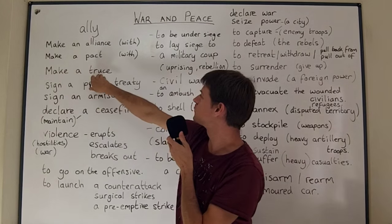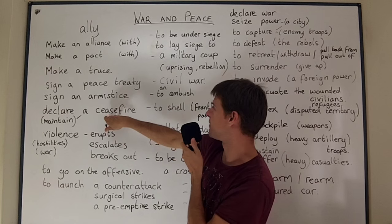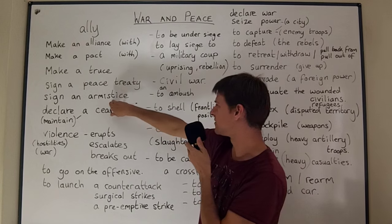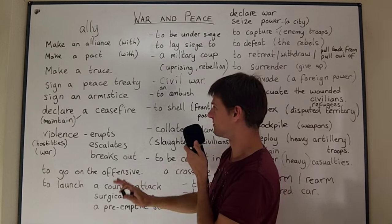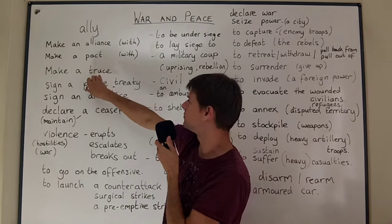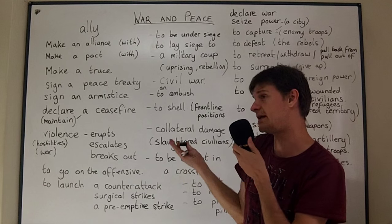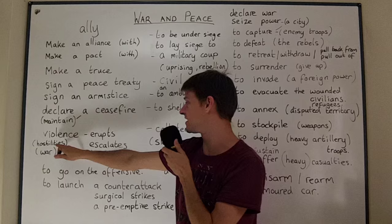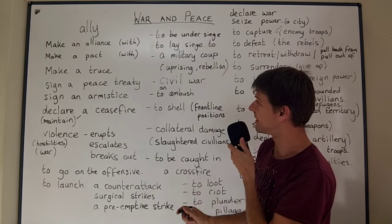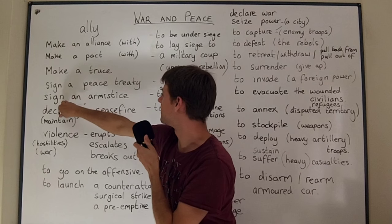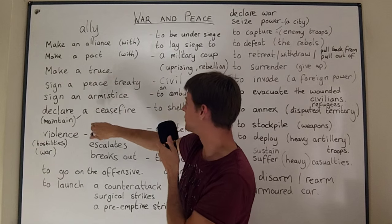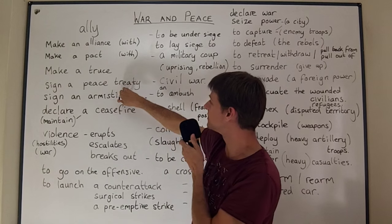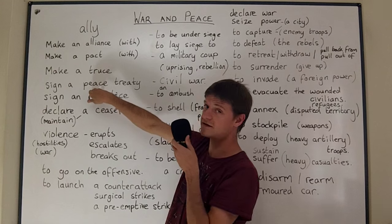You can also make a truce. A truce is a type of ceasefire — an agreement to stop fighting. The same goes for an armistice: it's an agreement to lay down your weapons and stop fighting. A truce might last three days or a week, but the ceasefire may not be maintained and hostilities or violence could break out once again. So an armistice, a ceasefire, and a truce are all very similar. A peace treaty is a type of contract aimed at peace.